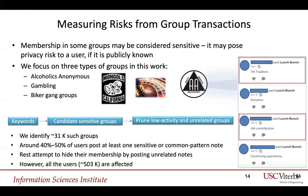Measuring risks from group transactions: membership in certain groups can actually be considered sensitive, as it can pose privacy risks to users if publicly known. In this work, we focus on three types of groups: Alcoholics Anonymous, gambling, and biker gang groups. Our methodology includes utilizing keywords to identify candidate sensitive groups, and we then prune low-activity and unrelated groups. We identified about 31,000 such groups. For these groups, around 40 to 50% of users post at least one sensitive or common-pattern note, while the rest try to hide their membership by posting unrelated notes. However, all users get affected.